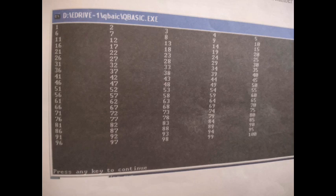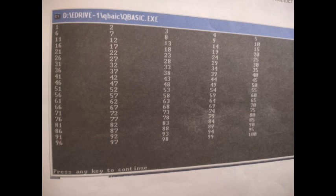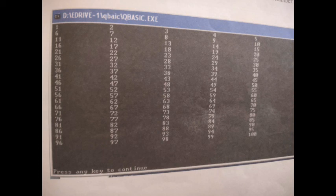If we give step value as 2 starting from 0, it will print 0, 2, 4, 6, 8 and so on. If we give step value 2 starting from 1, it will print 1, 3, 5, 7, etc. If you want to print only even numbers, give step value as 2 starting from 0. If you want to print odd numbers, give i = 1 to 100 with step value 2, so it prints 1, 3, 5, 7 up to 99.